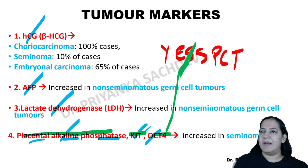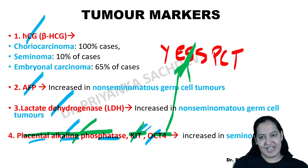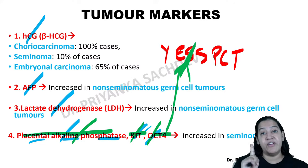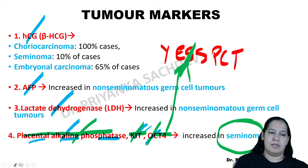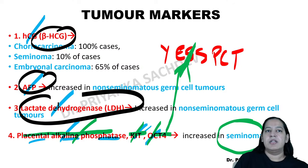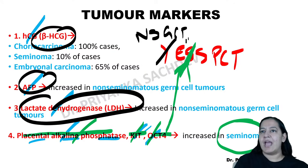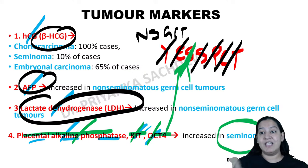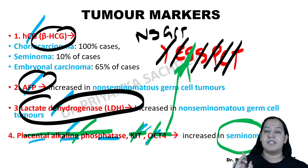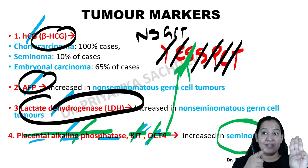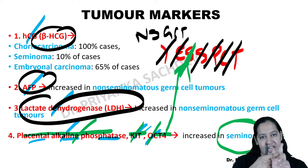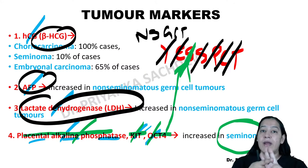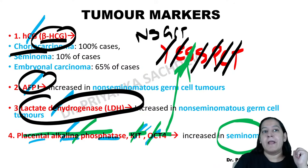Specifically: AFP is raised especially in Yolk sac tumor; beta-HCG is raised especially in choriocarcinoma; LDH is raised in all non-seminomas. Note: PLAP is placental alkaline phosphatase — not acid phosphatase (important MCQ distinction). Beta-HCG and LDH may also be present in 10% of seminomas, but are not specific markers for seminoma. These are very important MCQ topics.